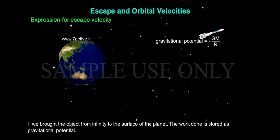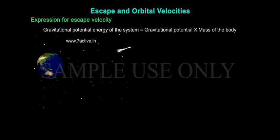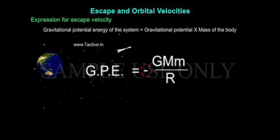If we brought the object from infinity to the surface of the planet, the work done is called gravitational potential. Gravitational potential energy of the system is equal to gravitational potential times mass of the body. GPE is equal to minus GMm by R. The negative sign indicates that the object is attracted by the planet.